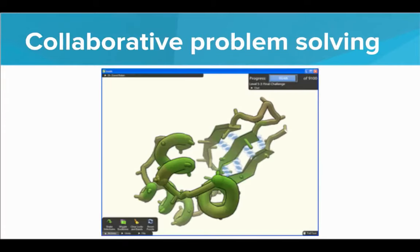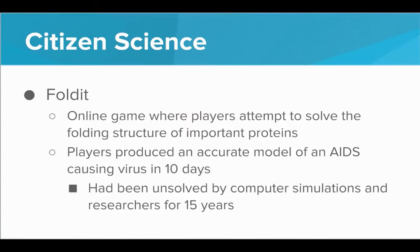The Internet also enables collaborative problem-solving at a massive scale. Here we have a screenshot from an online research video game called Foldit, an example of citizen science — harnessing the problem-solving capacity of hundreds to thousands of citizens online to solve complicated problems. Players would attempt to solve the folding structures of very important proteins; by determining these structures, researchers can develop vaccines and understand diseases better. Once live, players produced an accurate model of an AIDS-causing virus in only 10 days — a virus that had gone unsolved by computer simulations and researchers for 15 years.